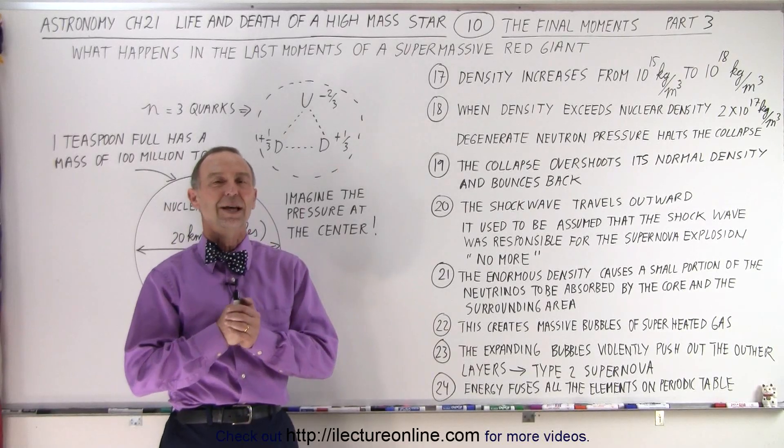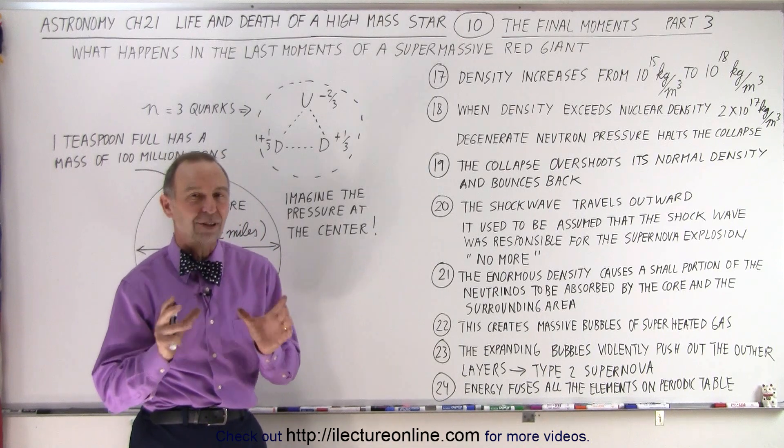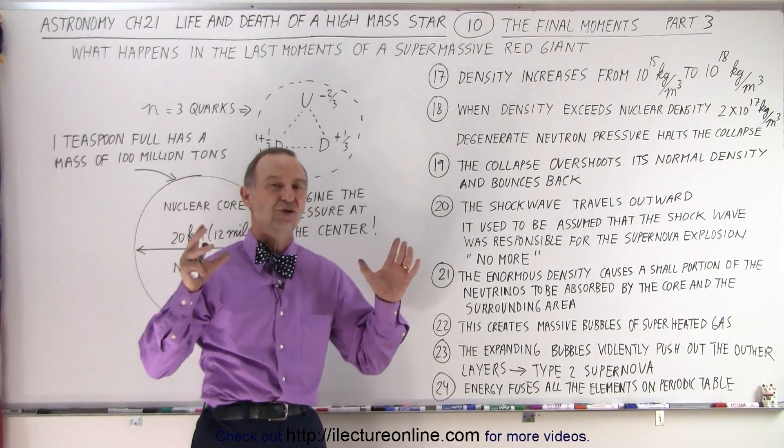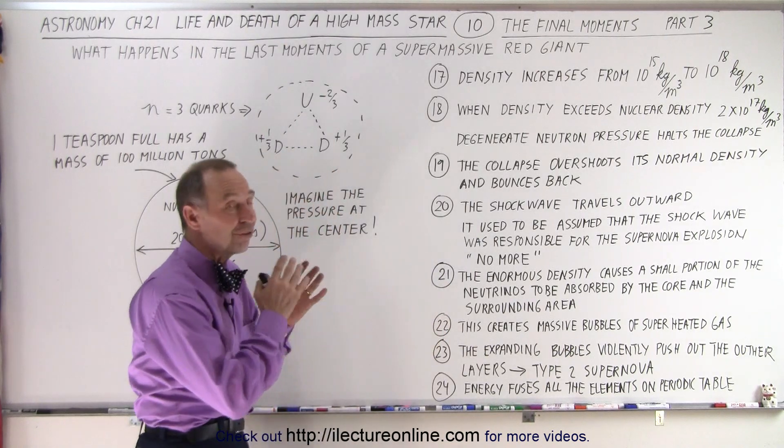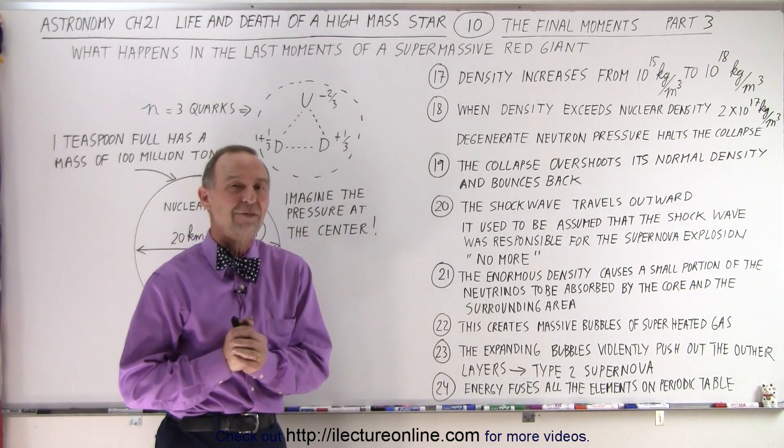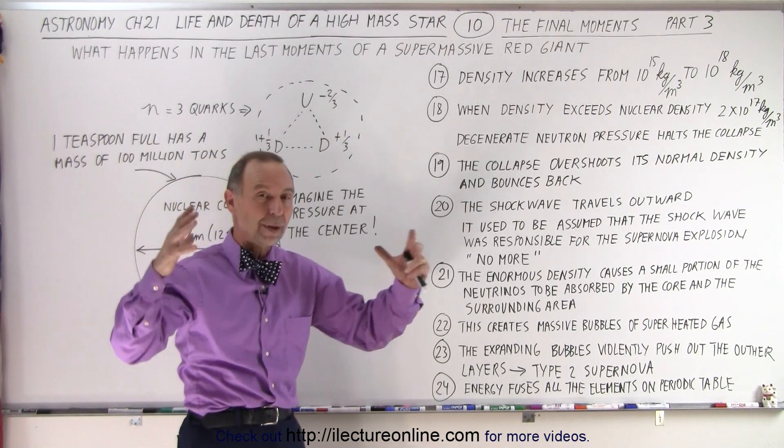Welcome to ElectronLine. So here's the last part, part 3, of what happens in the last few moments of a giant red, of a super red giant, in its last phases, the last moment of its life before it turns into a type 2 supernova.